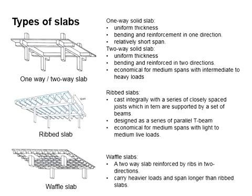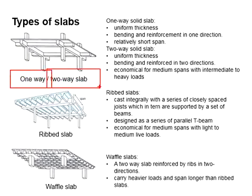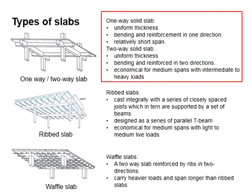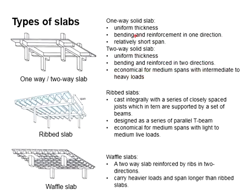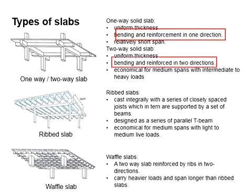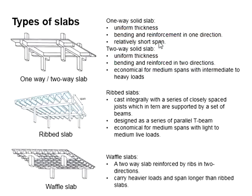There are different types of slab. The first one is one-way or two-way slab. One-way and two-way slabs differ in that they bend and are reinforced in one direction or in two directions. Their thickness are normally uniform, and the one-way slab is normally used for the short span.